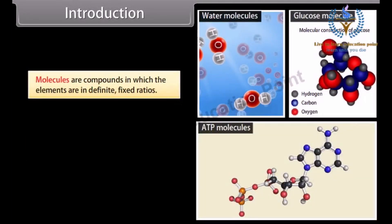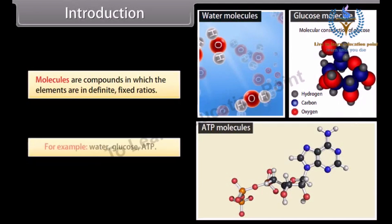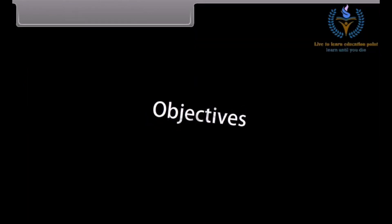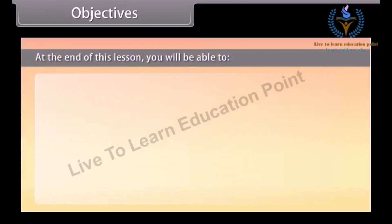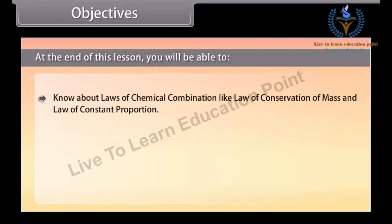Molecules are compounds in which the elements are in definite fixed ratios, for example water, glucose, ATP. Objectives: At the end of this lesson you'll be able to know about laws of chemical combination like law of conservation of mass and law of constant proportion.